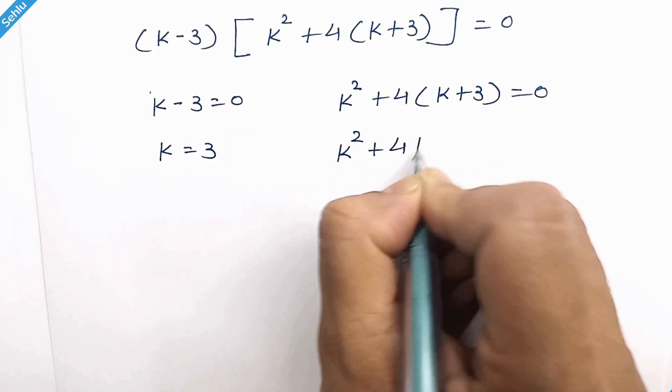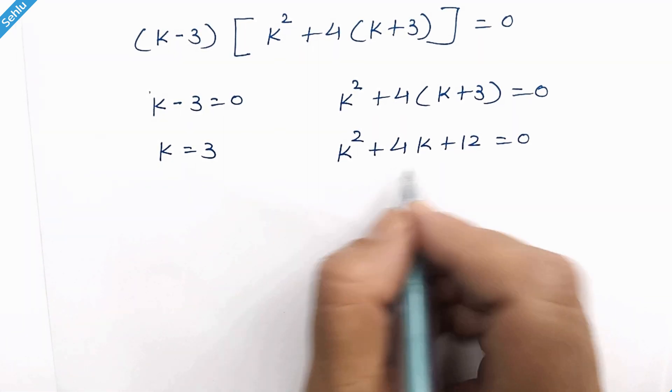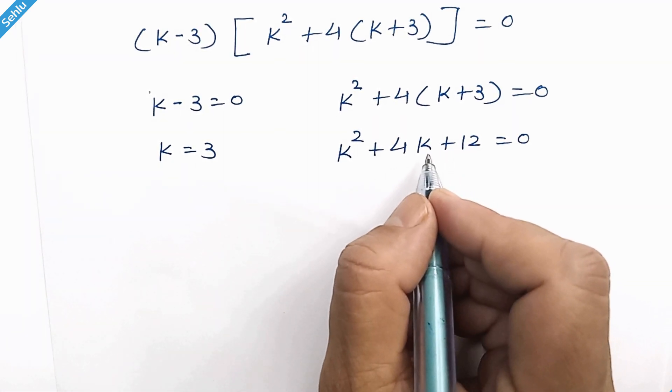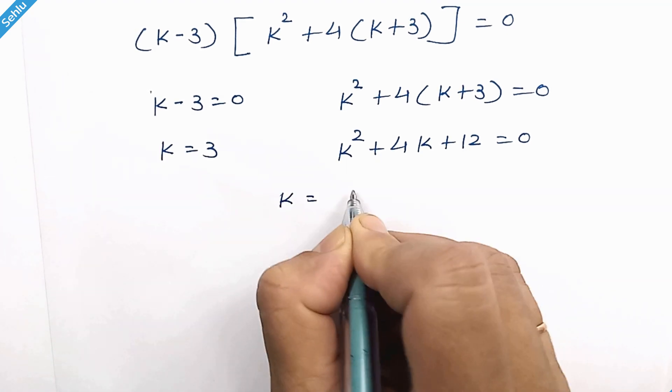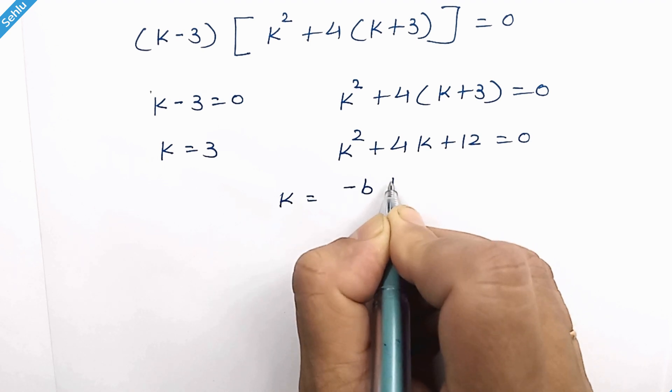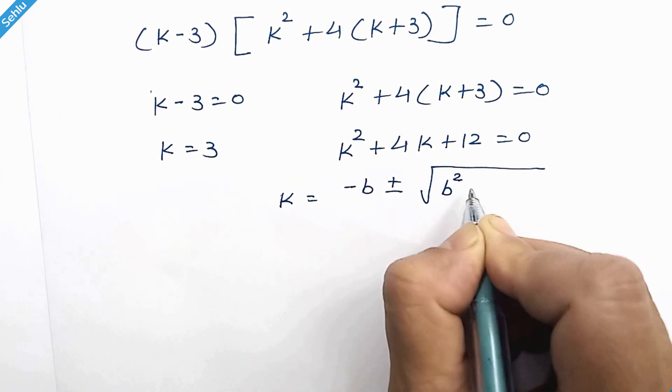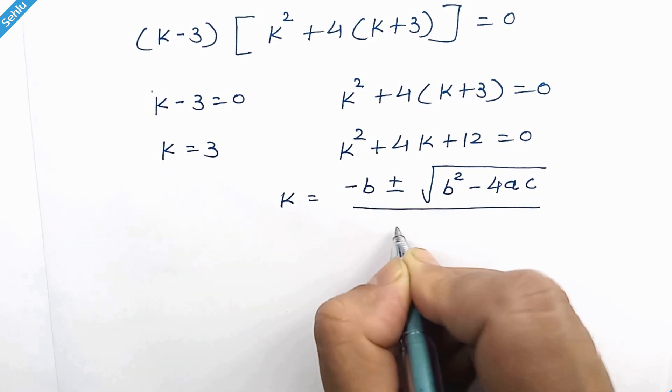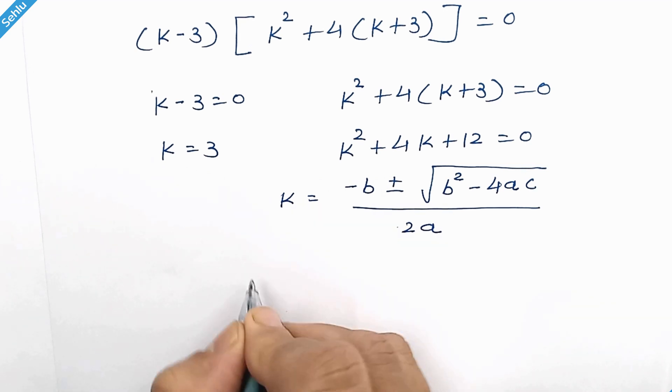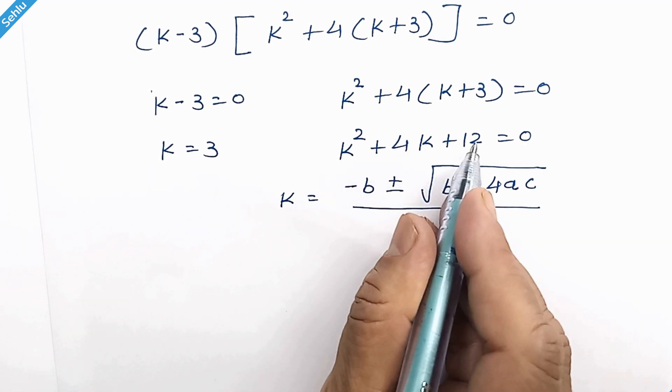Opening the bracket, it's a quadratic equation. Let's use the standard quadratic formula which is k is equal to negative b plus or minus square root of b square minus 4ac over 2a. Here a is 1, b is 4, and c is 12.